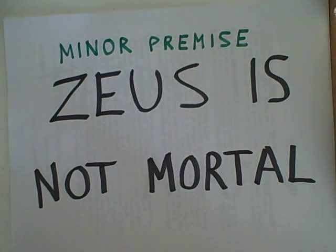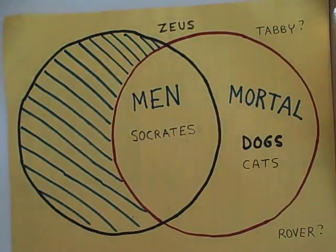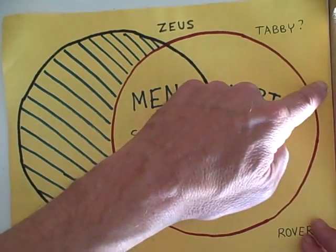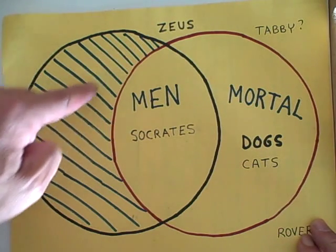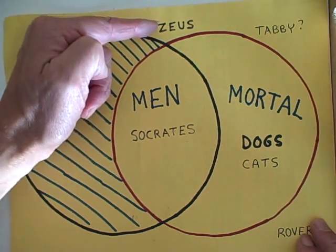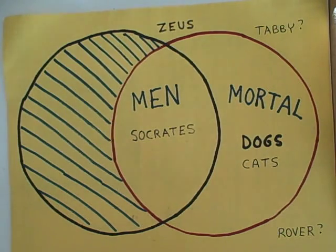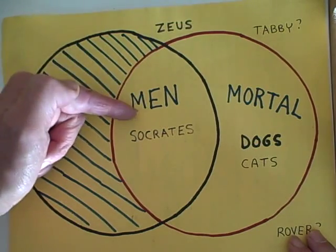Let's look at a different minor premise from which we can also get a valid conclusion: Zeus is not mortal. Going back to our overlapping Venn diagram, Zeus must be somewhere outside of the circle of mortality. He can't be in the men-who-are-immortal area, since that is shaded in to indicate it doesn't exist. So we're going to have to put Zeus outside of both circles. He's a Greek deity; he's not a man. So the conclusion we may derive is Zeus is not a man.